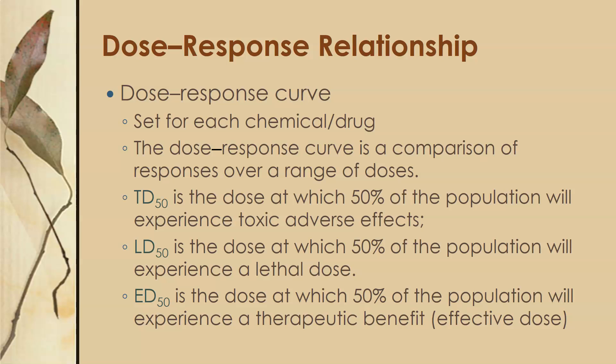There are several measurements usually found in a dose-response relationship. TD50 is the dose at which 50% of the population will experience toxic adverse effects. LD50 is the dose at which 50% of the population will experience a lethal dose. ED50 is the dose at which 50% of the population will experience a therapeutic benefit — the effective dose, relevant when developing new drugs. Toxins don't have an ED50 because they have no therapeutic benefit.